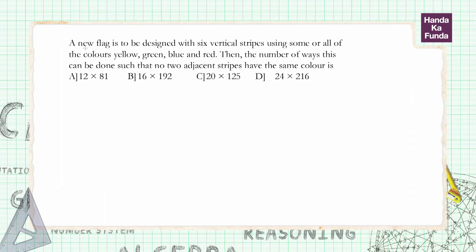In this particular question, a new flag is to be designed with six vertical strips. This is roughly what my new flag looks like - it should have six strips: one, two, three, four, five, and six strips. If we have four colors - yellow, green, blue, and red - then the number of ways we can color it such that no two adjacent stripes have the same color.